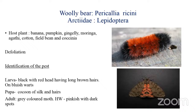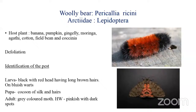The next pest is the uzi bag worm, Pericallia ricini, belonging to family Arctiidae and order Lepidoptera. It attacks banana, pumpkin, gingelly, moringa, agathi, cotton, field bean, and coccinia. This pest is also a defoliator. The larvae are blackish brown with a red head and thick hairs arising from bluish warts all over the body. They pupate in a cocoon of silken hairs. The adult is a gray moth with dark spots on pinkish hind wings — the identification mark of this pest.